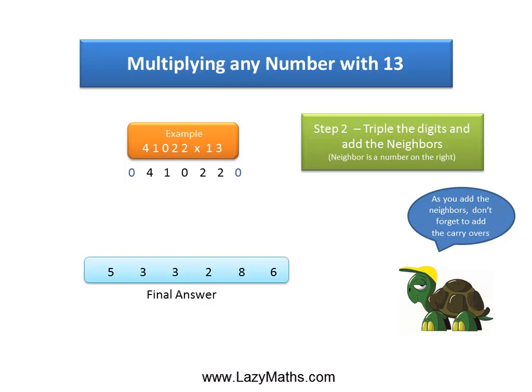And so we get our final answer as 533,286. In other words, 41,022 times 13 is equal to 533,286. And that's it. Thank you.